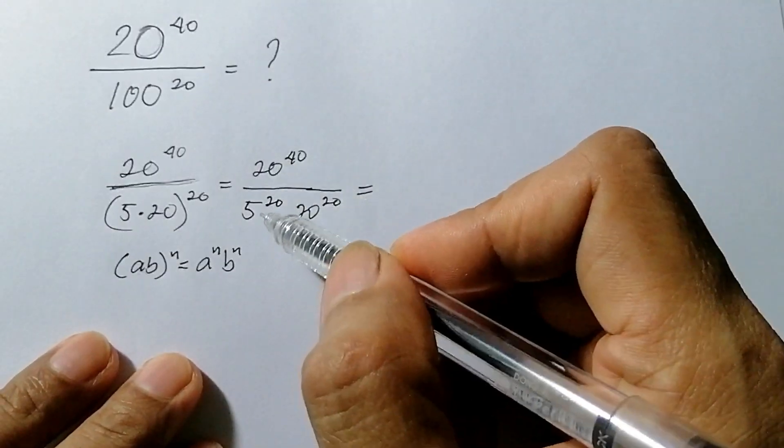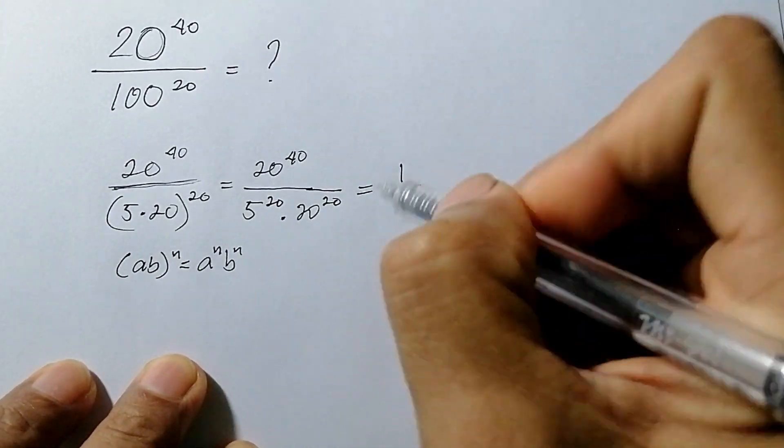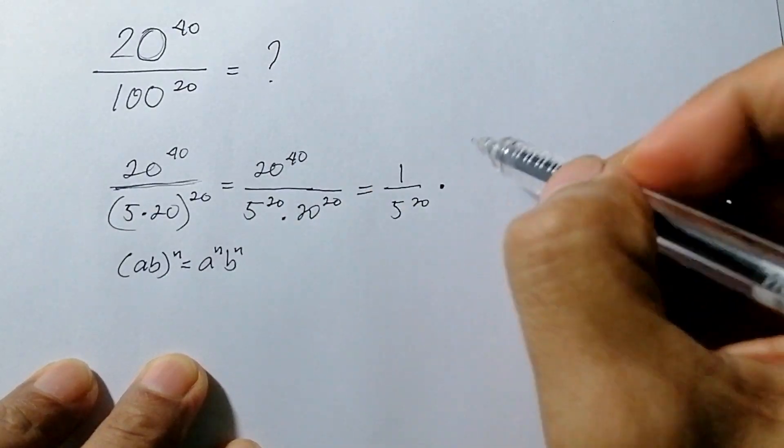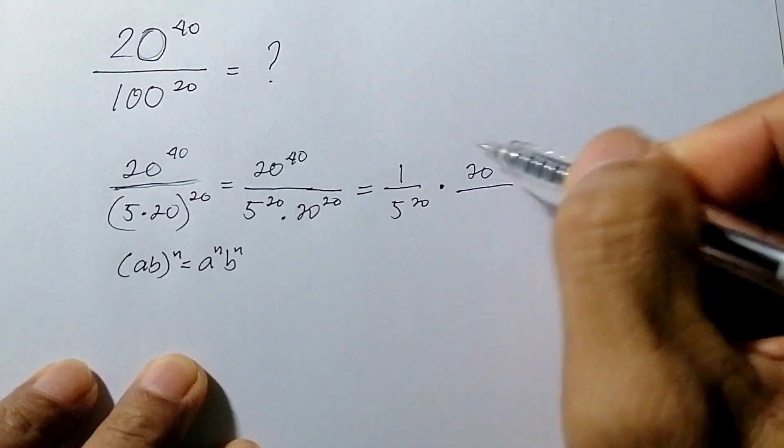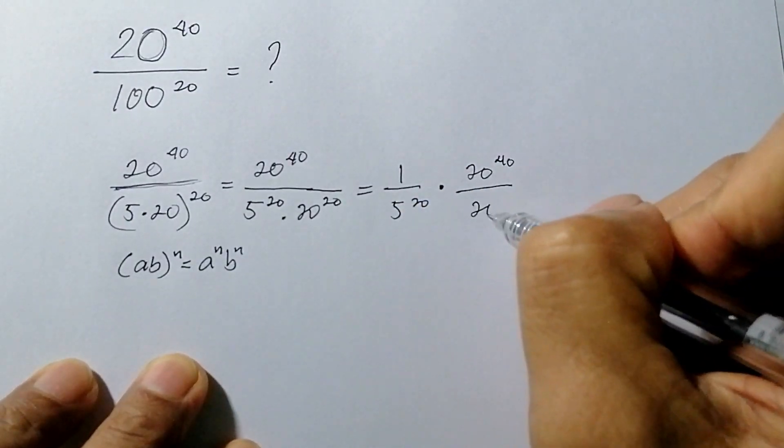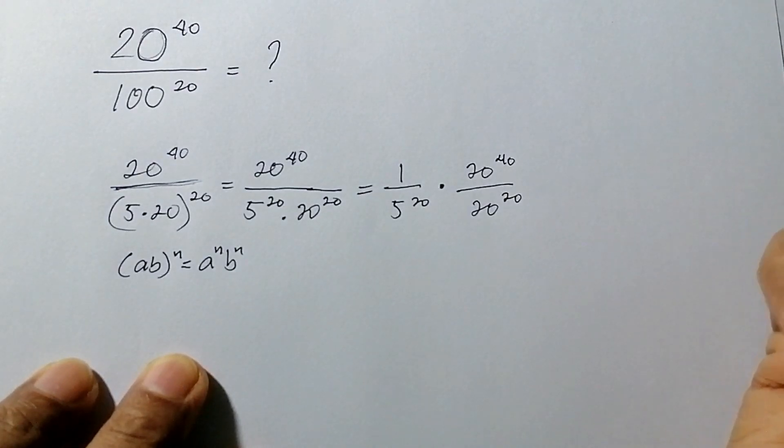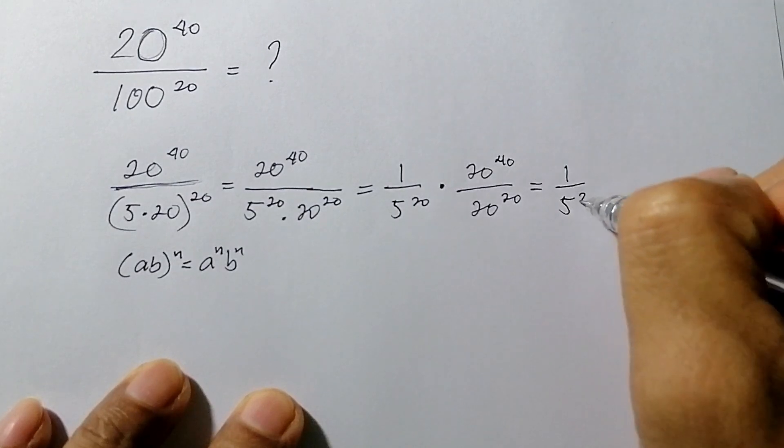Now we divide this by its denominator, so we write 1 over 5 raised to 20 multiplied by 20 raised to 40 all over 20 raised to 20.